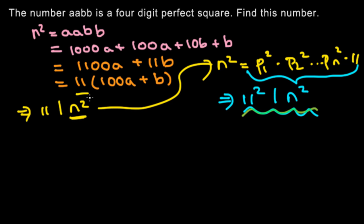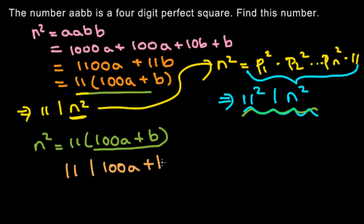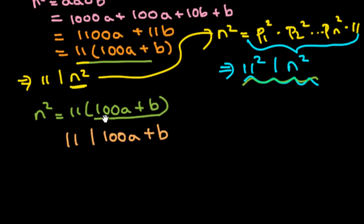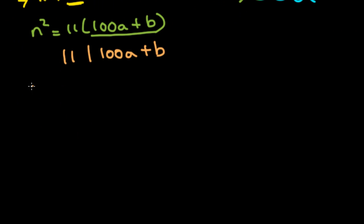So just rewriting this expression right here, we have n² equals 11 times (100A plus B). We already have an 11 right here. So this part must be divisible by 11. So 11 divides (100A plus B). Then once more, just rewriting this, 11 divides (99A plus A plus B).